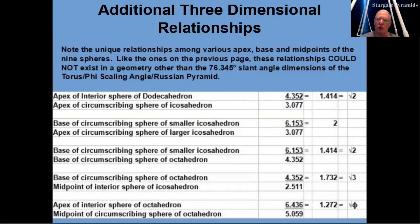What we found are seven unique geometric proportions and perfectly matching midpoints and apices from the previous diagram — none of which could have happened in any geometry other than the 76.345-degree slant angle found in the Russian pyramid and the torus.